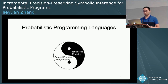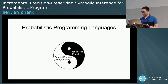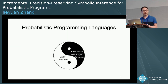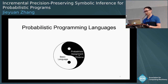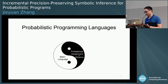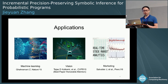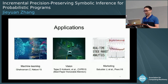Generally speaking, probabilistic programming tries to unify general purpose programming and probabilistic modeling. Probabilistic programming languages often extend from a basic language and introduce two features of probabilistic models: probabilistic assignments and observed statements. Probabilistic programming can be applied in machine learning, computer vision, and financial marketing.